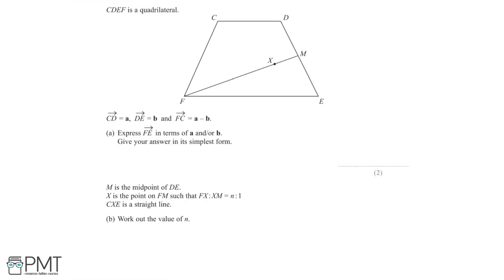Let's mark the vector FE on our diagram. The blue line shows how we can get from F to E, but just using that blue line we can't express the vector FE in terms of a or b. So let's figure out an alternative route: to get from F to E, we can go from F to C, then C to D, and finally D to E.